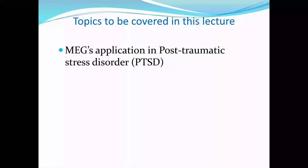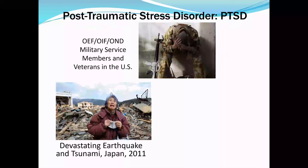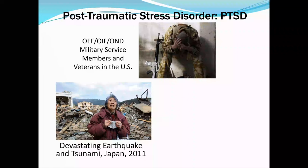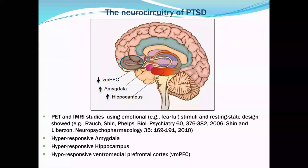Now I want to talk about another topic: post-traumatic stress disorder, PTSD. This is of particular interest because the veteran population suffers from both TBI and PTSD. PTSD is a major issue for veterans and active duty military personnel, and also happens in natural disasters — for example, the earthquake and tsunami in Japan in 2011. From prior PET and fMRI research, we know a certain brain circuitry is involved — the PTSD neurocircuitry. Three regions stand out: the amygdala shows hyperactivity, the hippocampus also shows hyperactivity, and the ventromedial prefrontal cortex (VMPFC) shows hypoactivity.